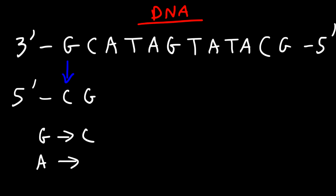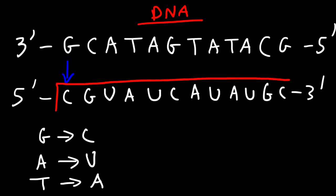What letter corresponds to A? A usually corresponds to T, but there's no T in RNA. Instead, A is going to correspond to U for uracil, but T in DNA corresponds to A in RNA. And so if we continue, everything else is going to be U, C, A, U, A, U, G, C. And so this is the mRNA strand that corresponds to the nucleotide sequence in DNA listed above.